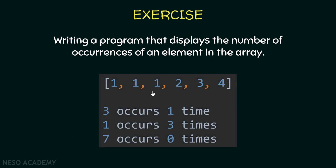Have a look over here. Suppose that we have this array. Now suppose that our program is working with the number 3 — it should display something like: the number 3 occurs one time in the array. And as you can see, the number 3 appears one time. Now suppose that we are searching for the element 1; in this case, the element 1 occurs 3 times in the array. As you can see, we have 1 three times.